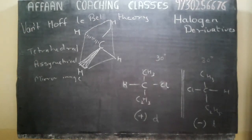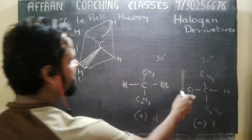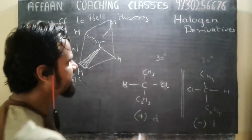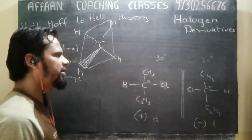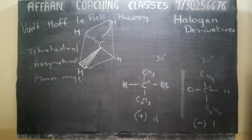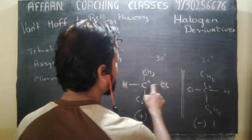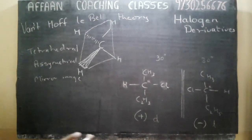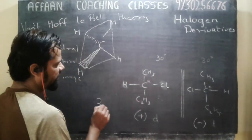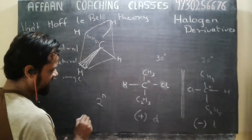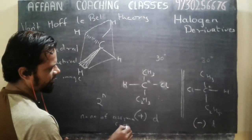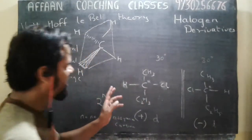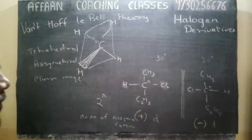This is the number of optical isomers. This is generally given by the formula 2 raised to N, where N is the number of asymmetrical carbon atoms. If the number of asymmetrical carbon atoms is 2, it becomes 2 squared, which means we will have 4 optical isomers.